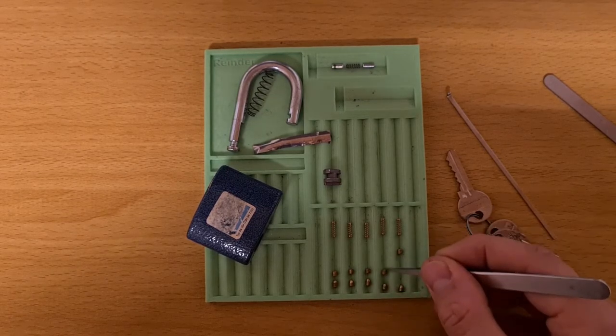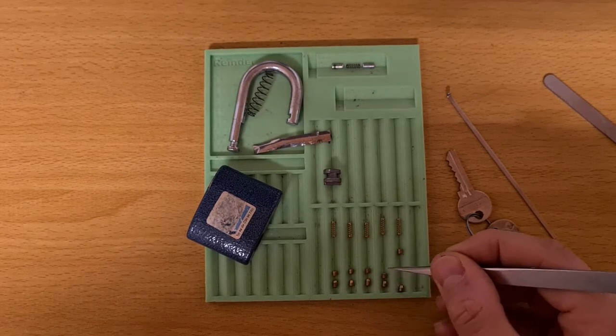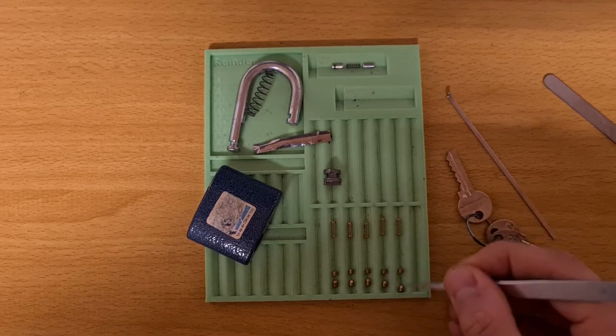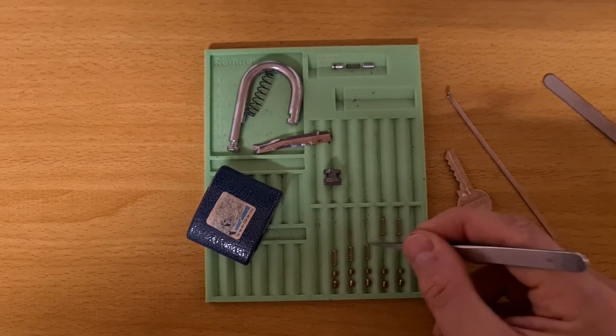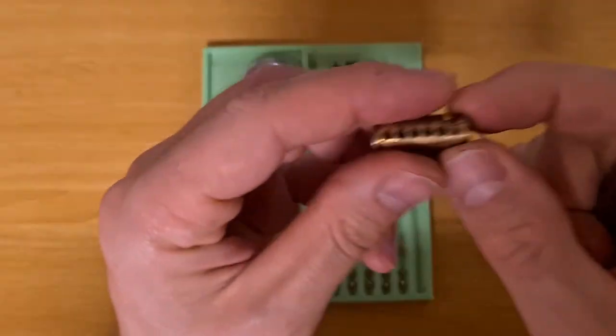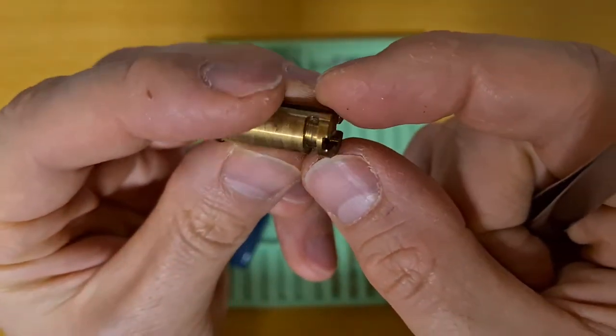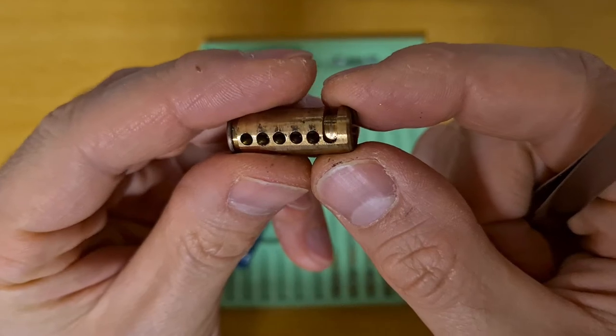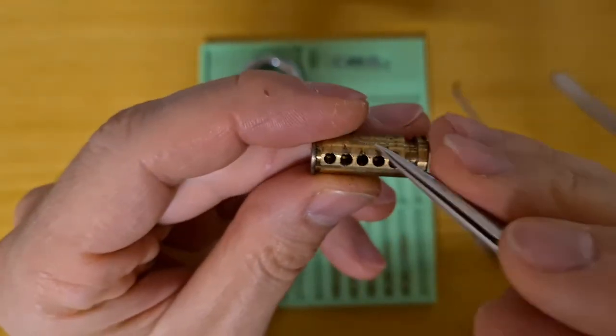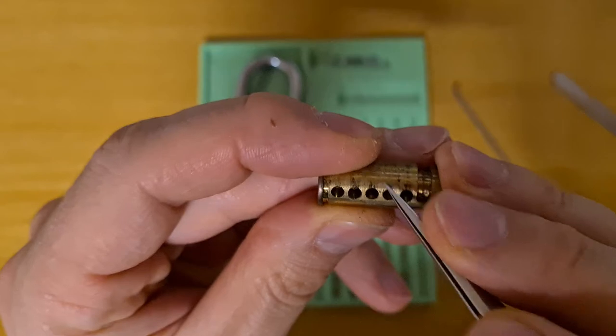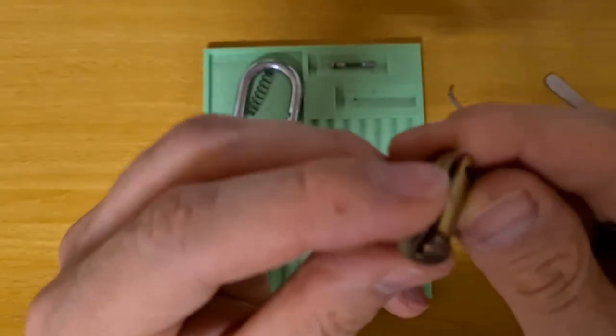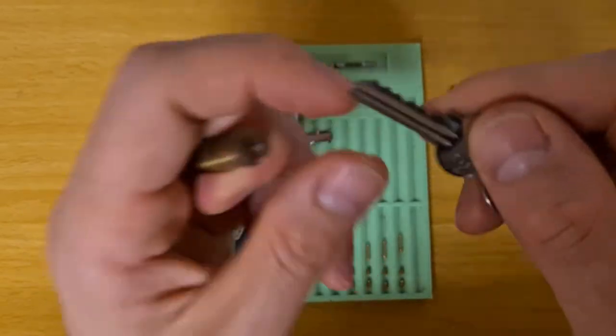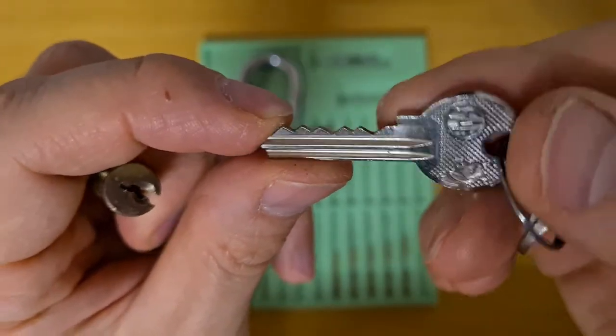So let me just quickly arrange it all. The core, here is the groove where the spring was holding it. Nothing special in the core obviously, other than some wear marks. Yeah, the key was quite easy bitting.